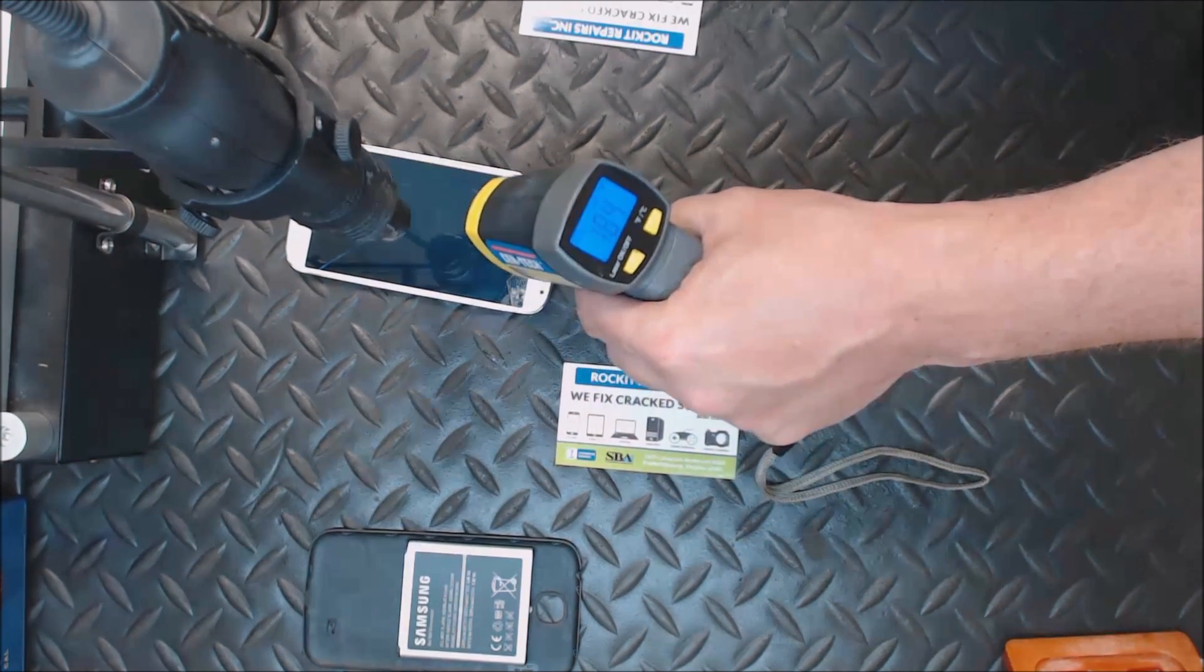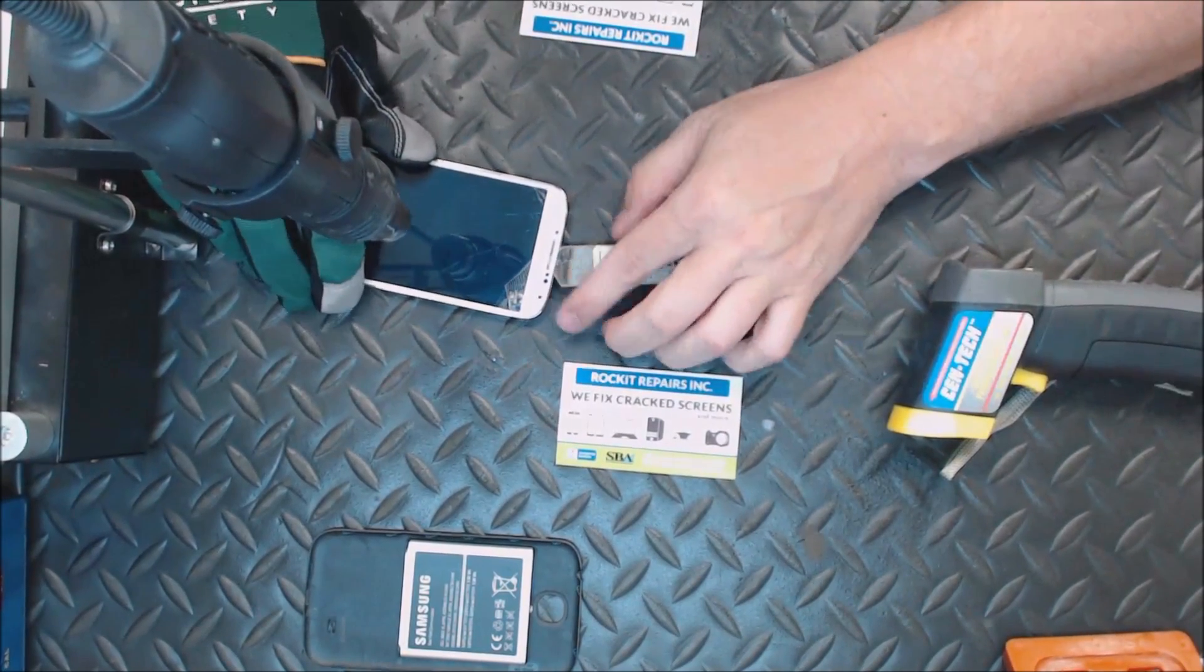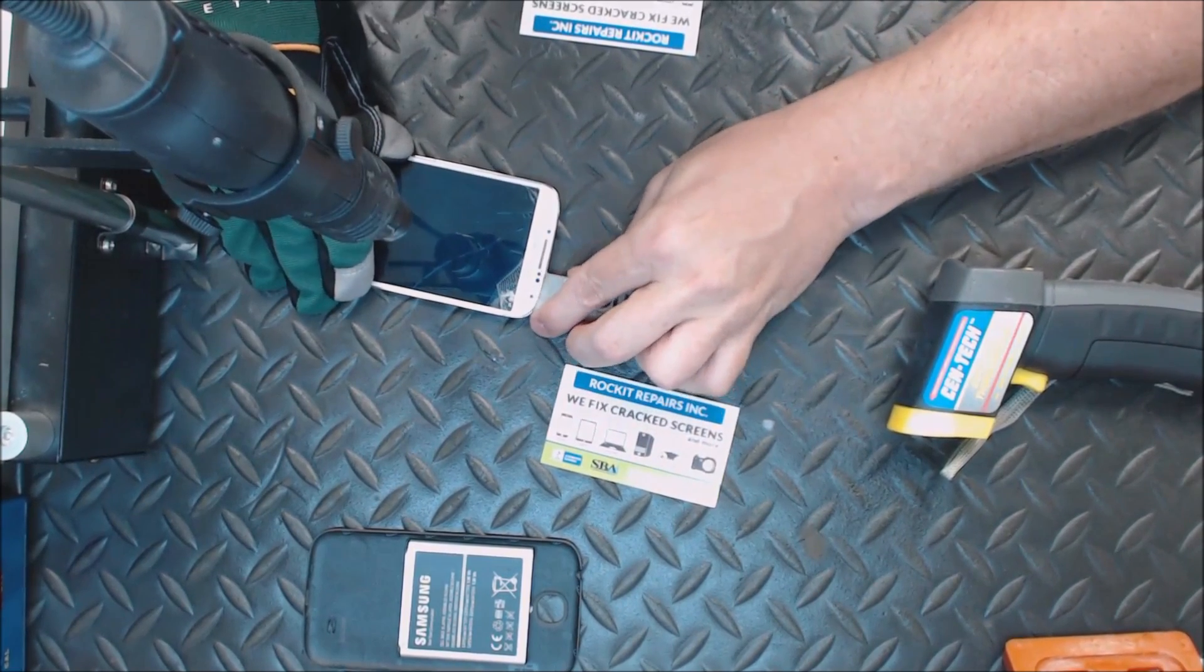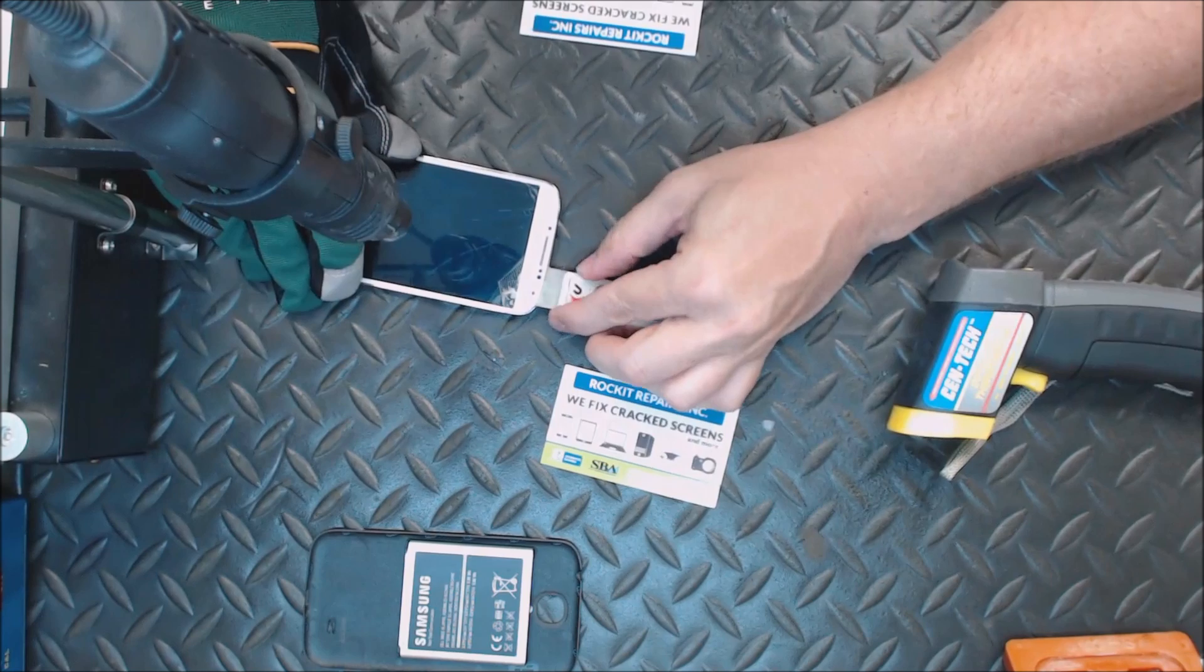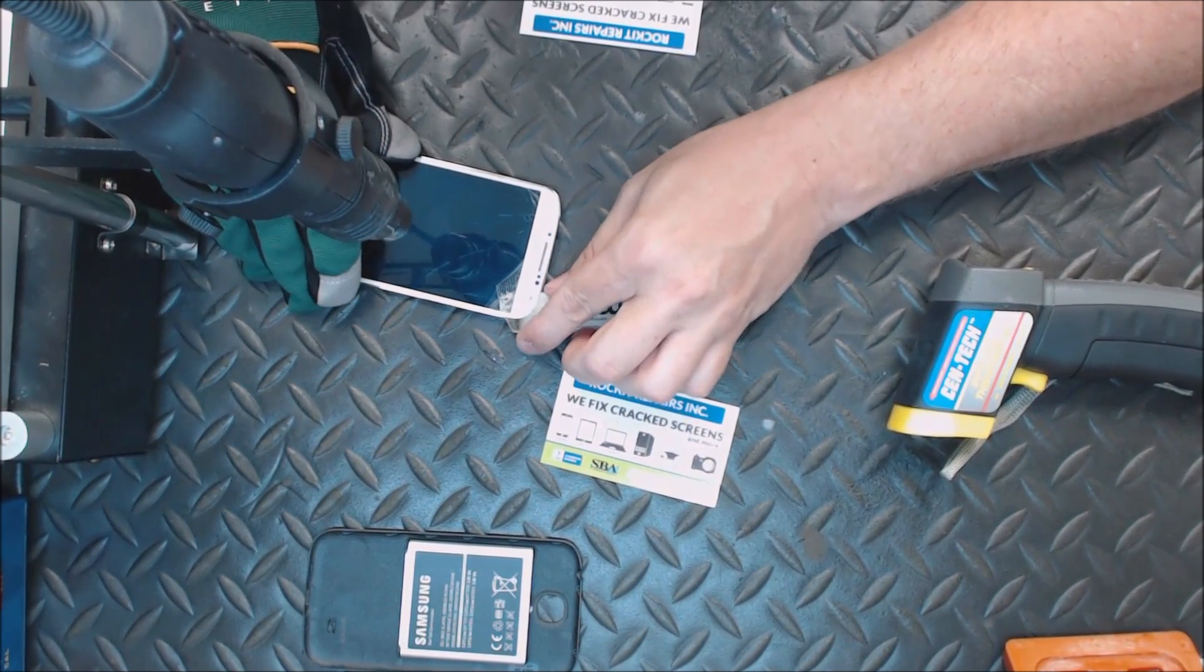You're going to start at the top right hand corner and start lifting. What you want to do is lift it up gently just to get the glass to separate from the LCD with the glue.